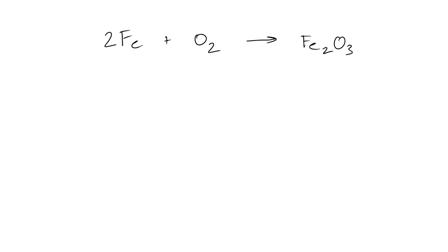We're going to have to find a way to get six oxygens — two times three equals six. On the right side we have three oxygens, so we're going to put a 2 in front of the Fe₂O₃ to get six oxygens on the right. But that's going to skew the iron — we now have two irons on the left and four on the right. So we erase the 2 in front of Fe and put a 4 instead. Now we have four irons on the left, four irons on the right, six oxygens on the left, and six oxygens on the right.